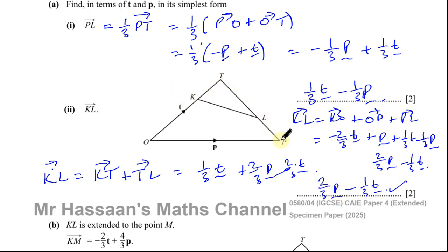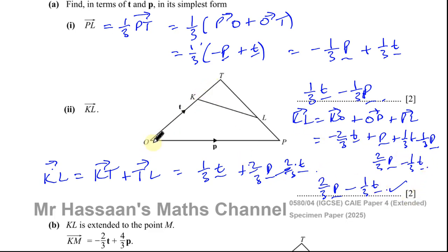So whether you go K to T plus T to L — where T to L is two thirds of this and opposite signs because it's going the opposite direction — or the long way around K to O plus O to P plus P to L, giving minus two thirds t plus p plus the answer from part one, in both cases we get the same answer. So there's the answer to parts A one and two.